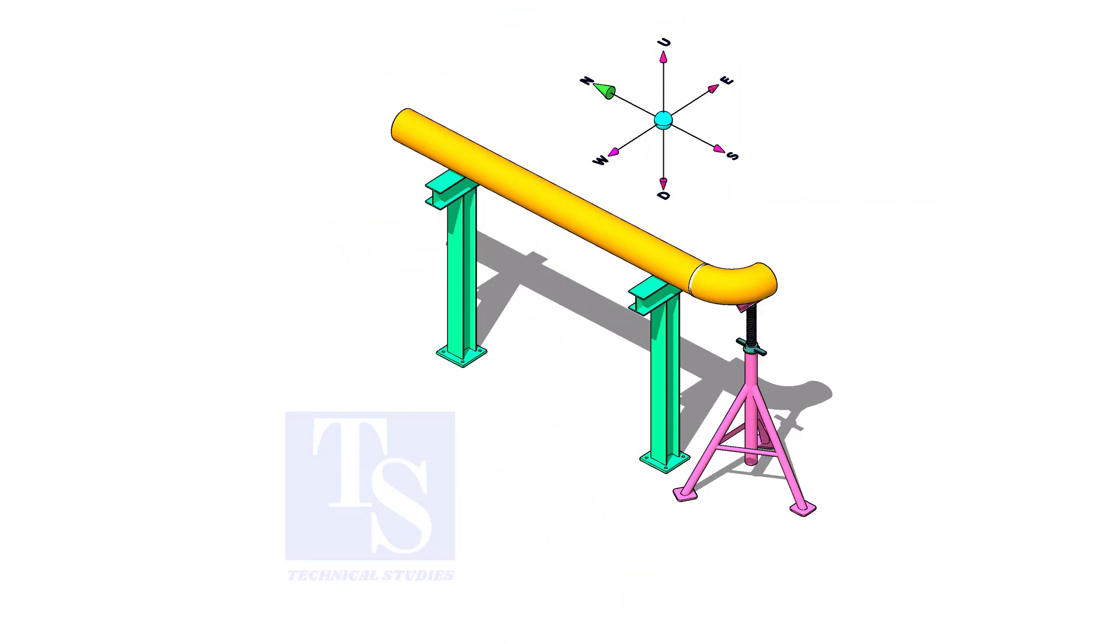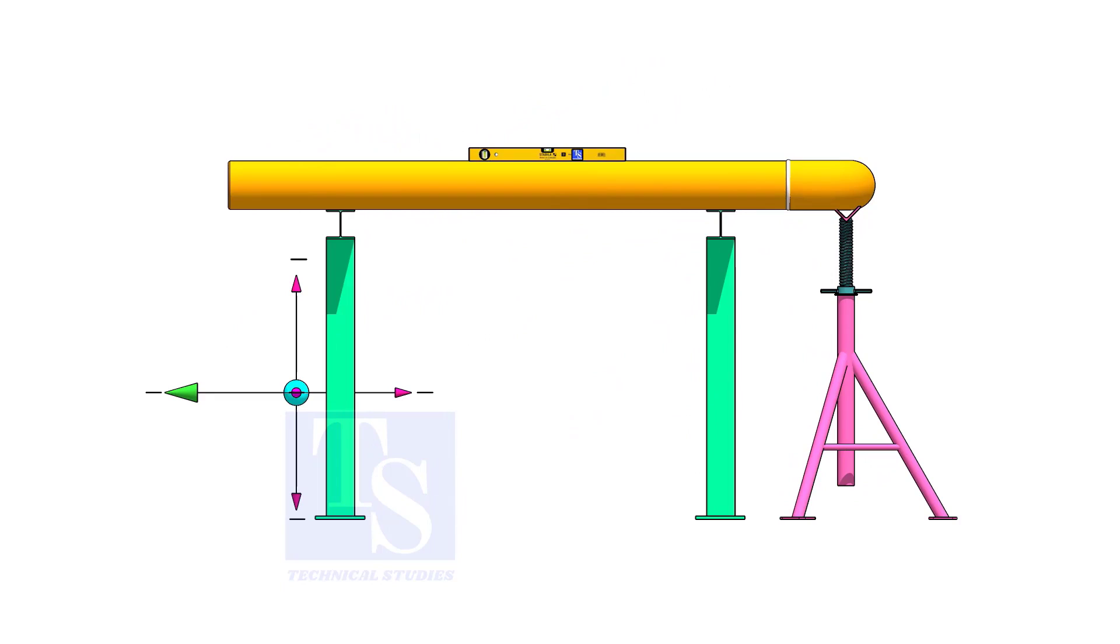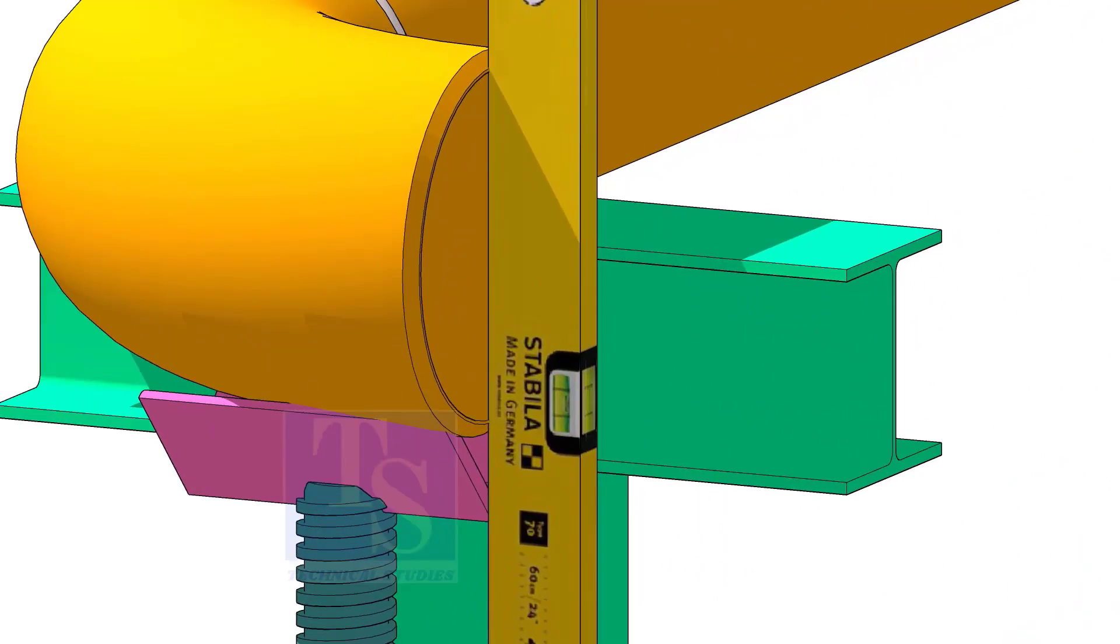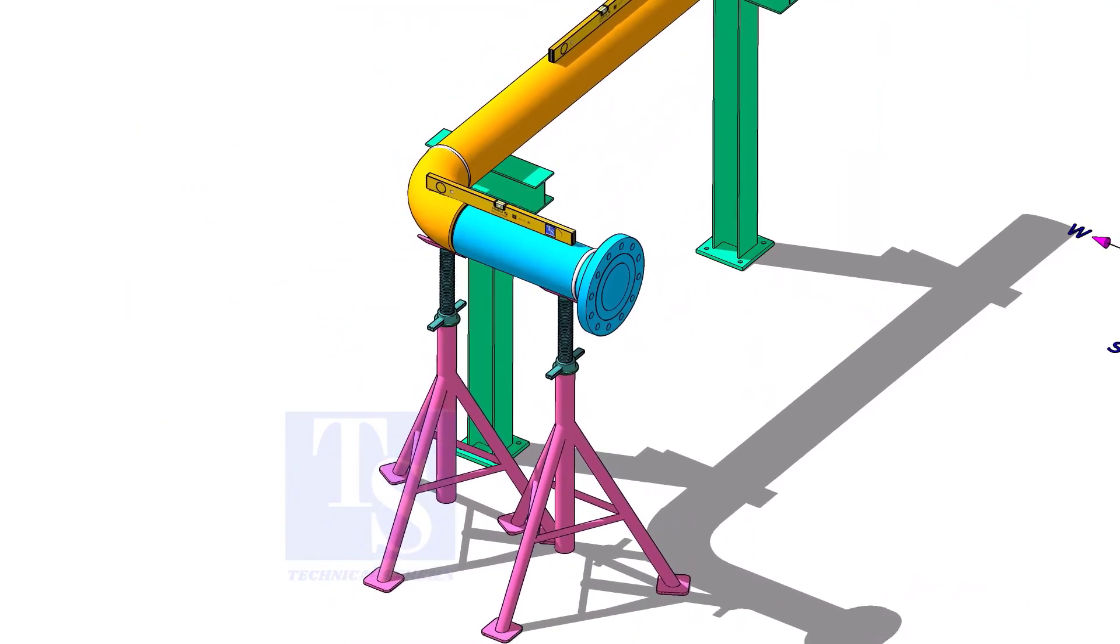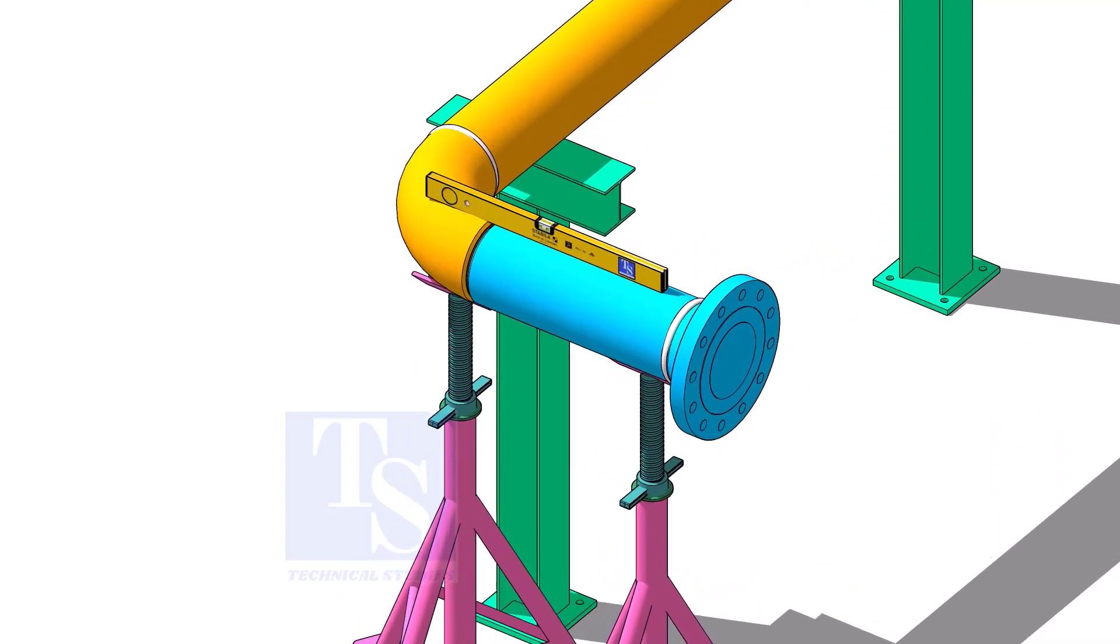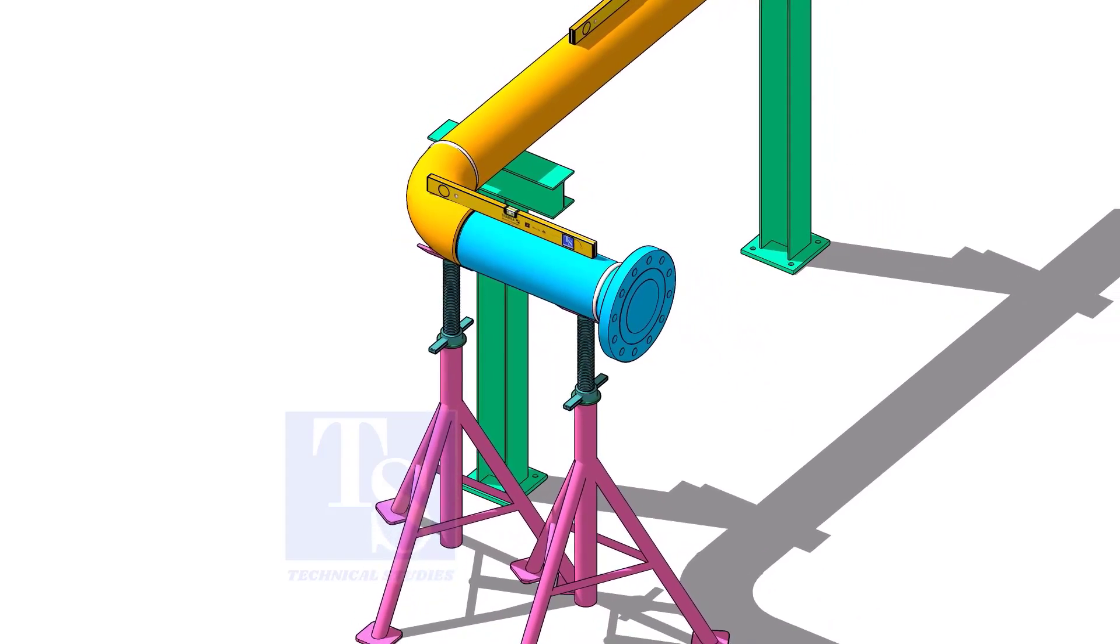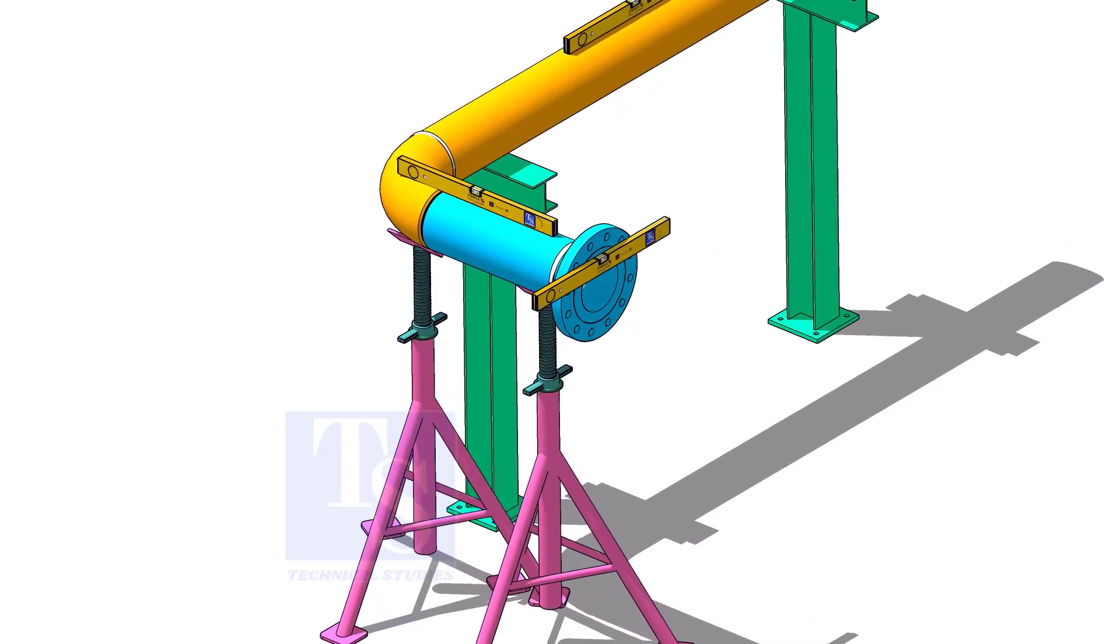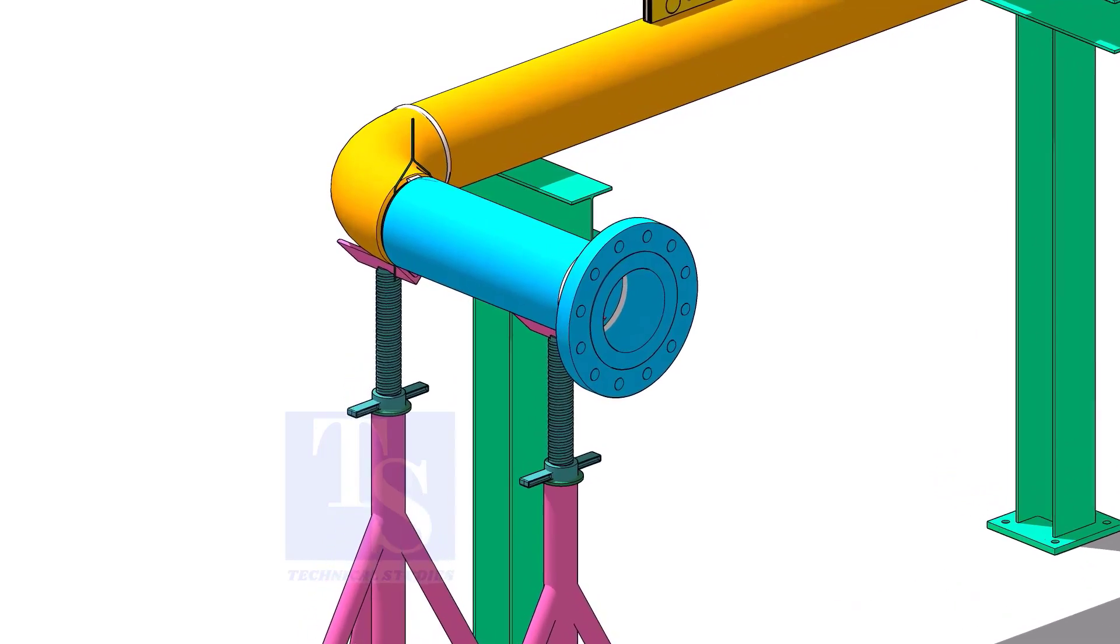Put spool 3 on its location and check the level of the pipe. Put spool number 2 in its position and level it. Correct the whole plumbness and tack weld on the top and bottom side of the joint.